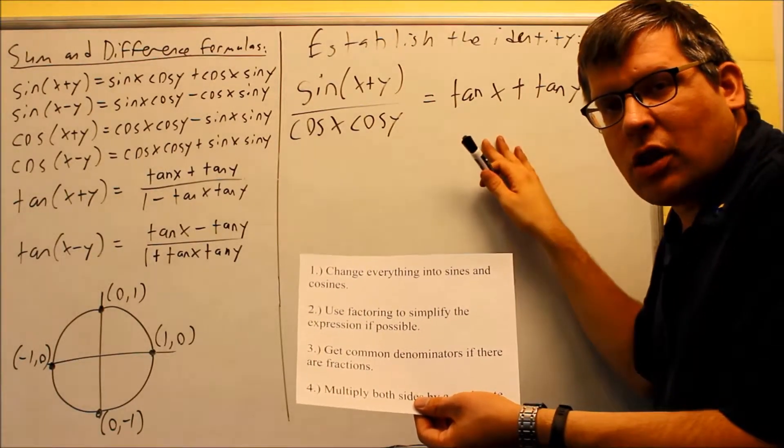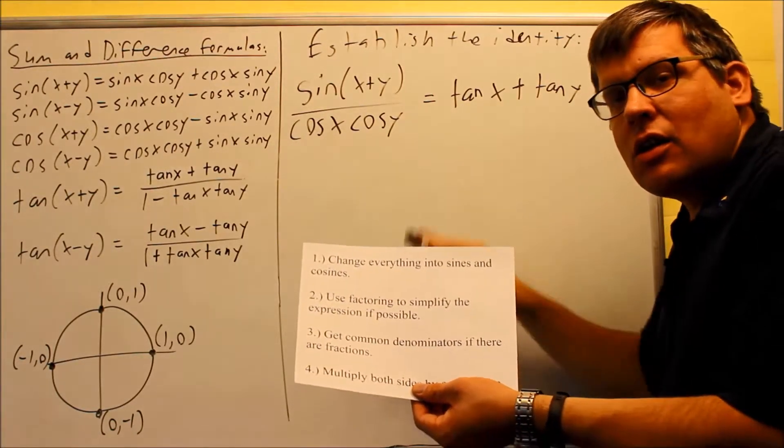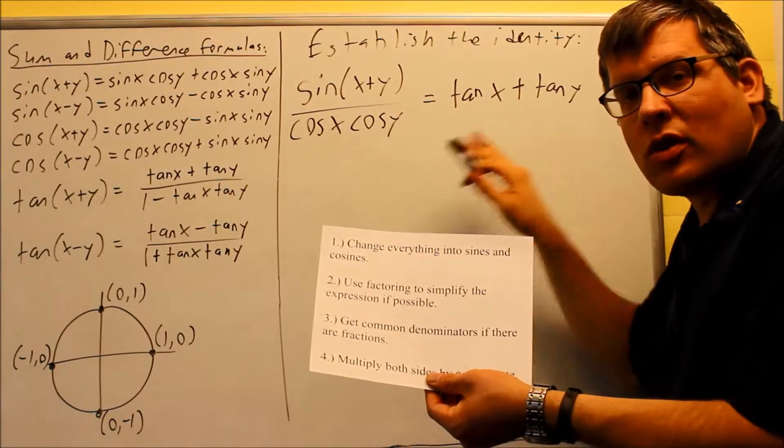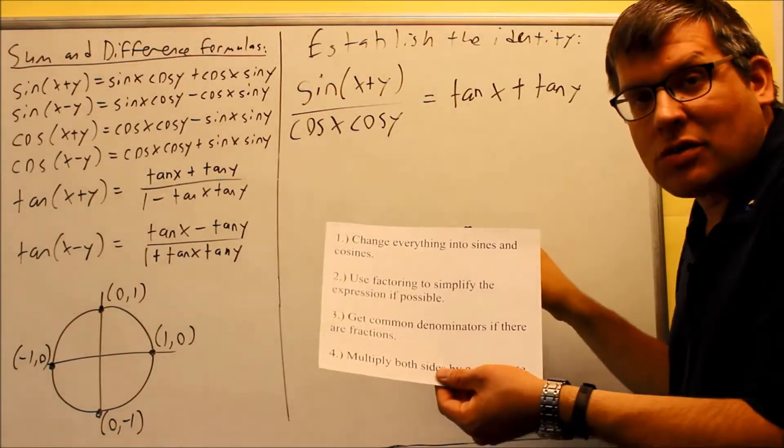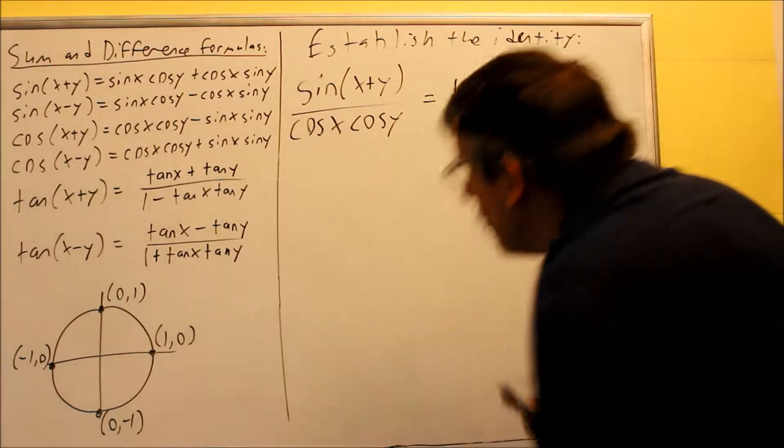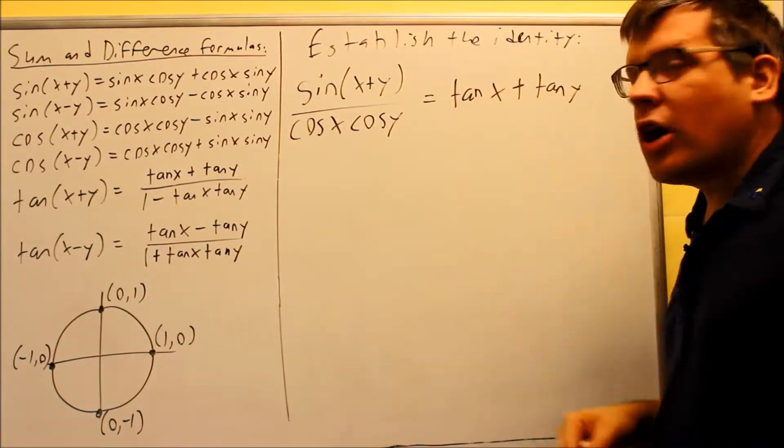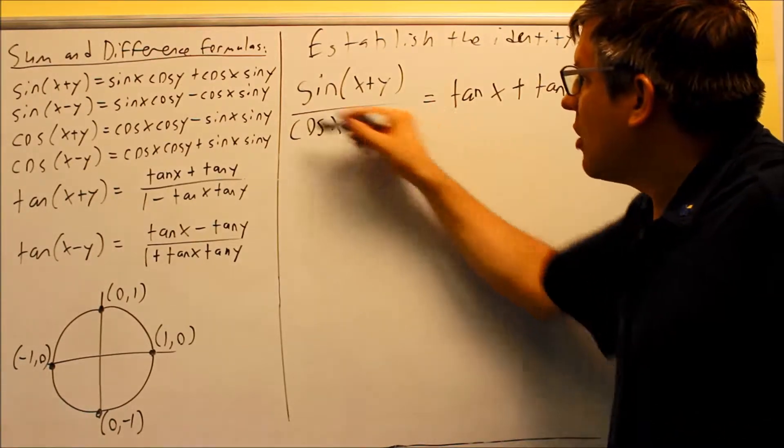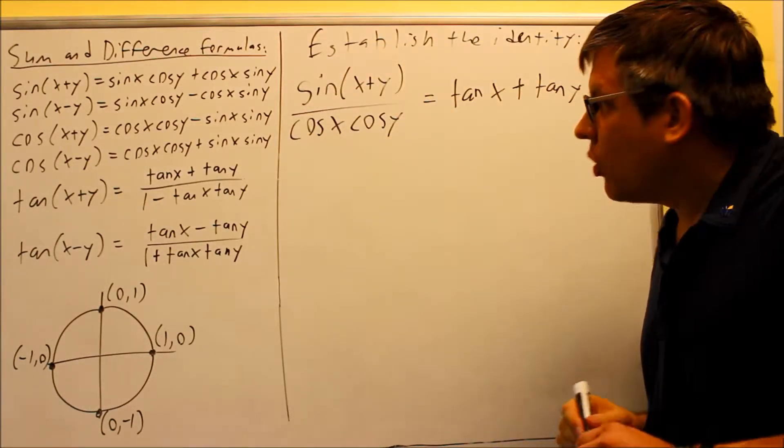So I'm going to do this differently than what's in the notes to show you that there's more than one way of solving these problems. As long as you show that one side equals the other and the math is correct, then you've proven and established the identity. So we're going to do that on this one. I'm first going to change the right-hand side into sines and cosines. I'm actually not going to do anything with the left-hand side.